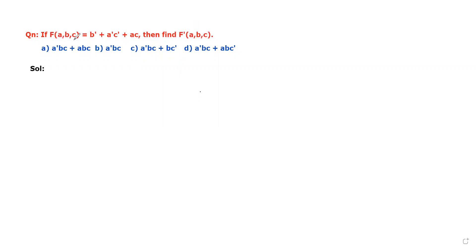Here f(a, b, c) is a boolean function in the form of SOP, that is sum of products. We need to find f'(a, b, c), where f' means the complement of the boolean function.